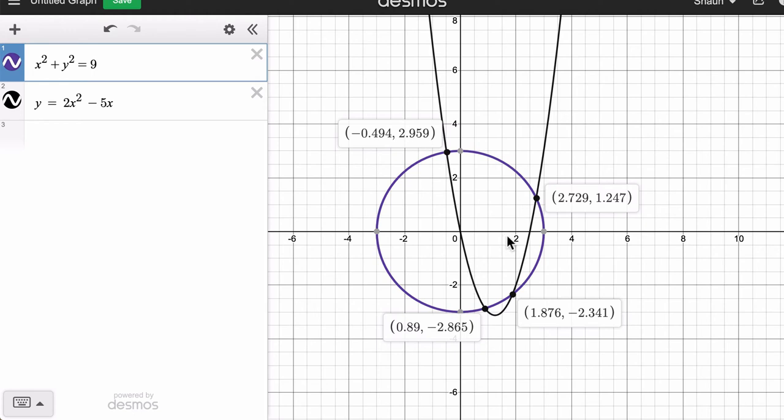But there's also an algebraic approach. So graphically, a system has a solution whenever those equations are meeting each other. Those are the solutions to the system. If they don't meet, there is no solution. If they always meet, there are infinite solutions. But here, there are four solutions.